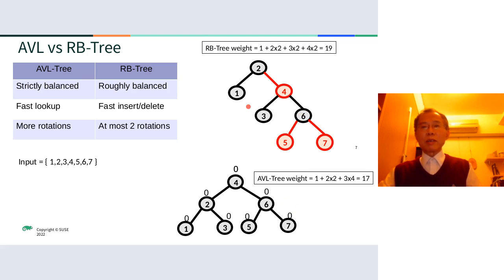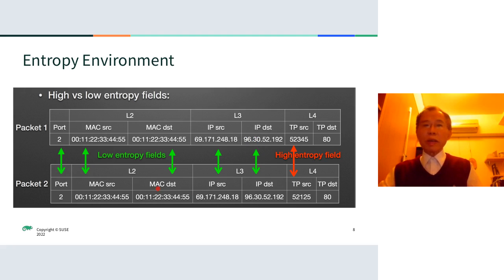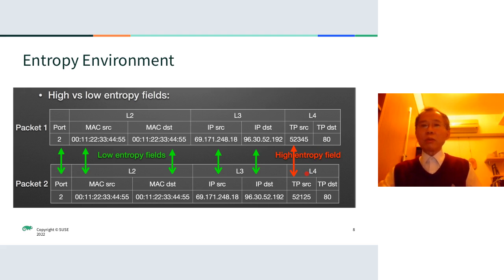When I say high entropy, that means the input data is changeable. The entropy term comes from the thermodynamics area. For example, if the MAC address destination and source are fixed, and the IP source and destination address are also fixed, we call that a low-entropy environment. But for TCP or UDP port numbers, they are changeable, so the input data will be in a high-entropy environment.